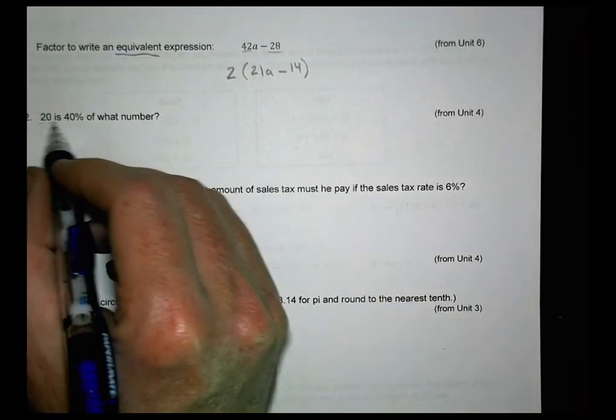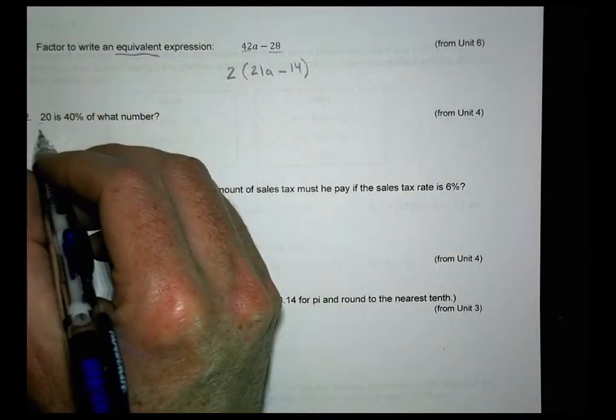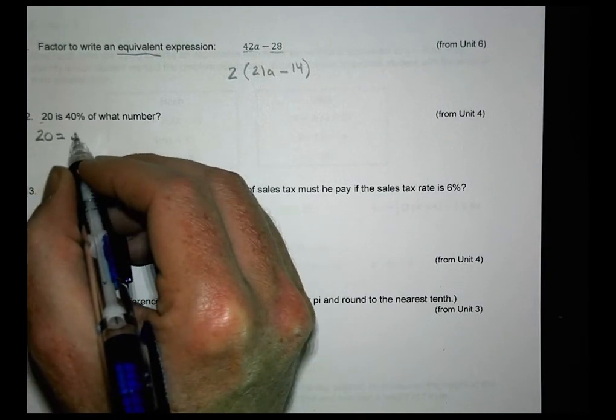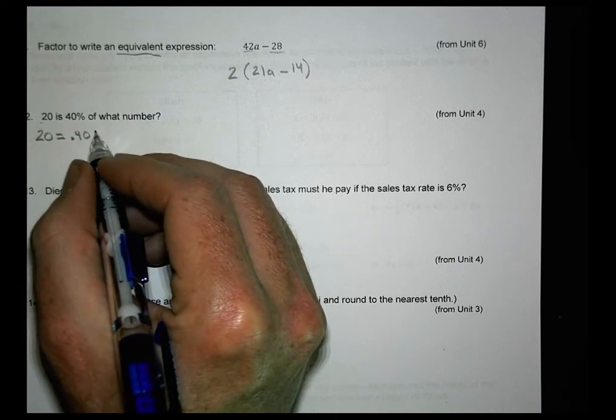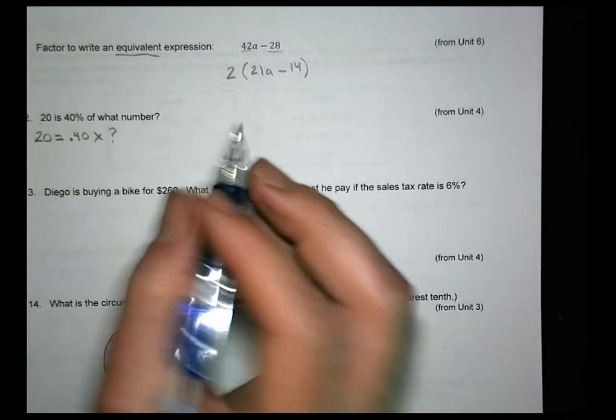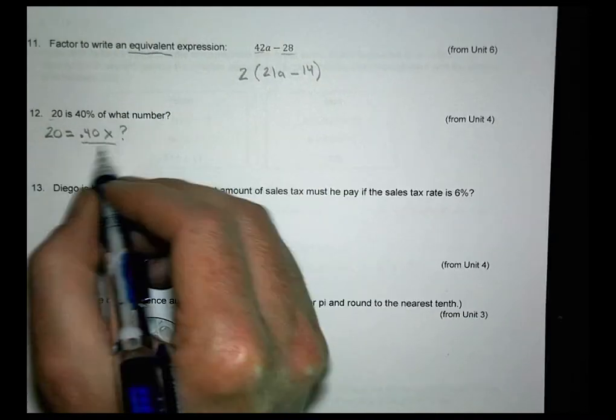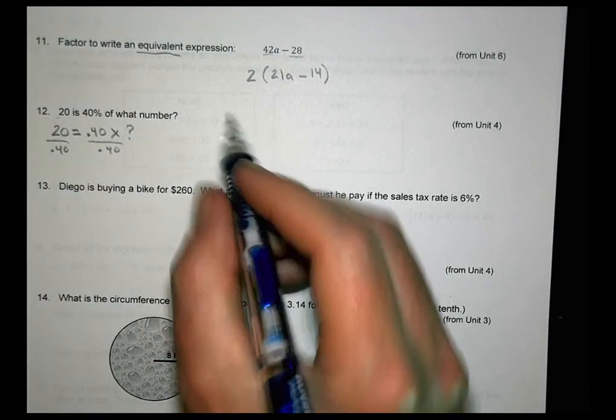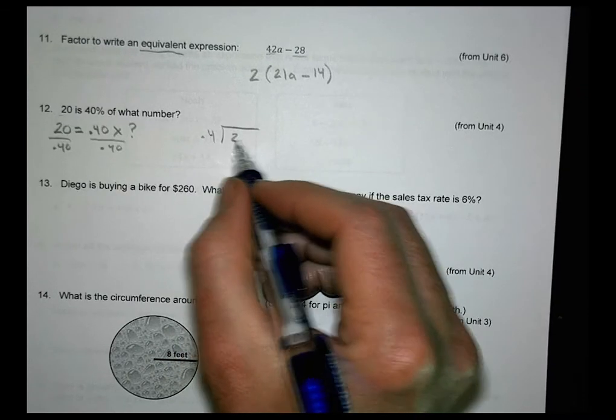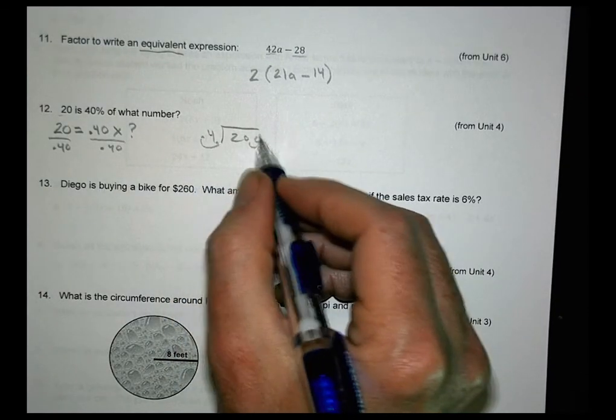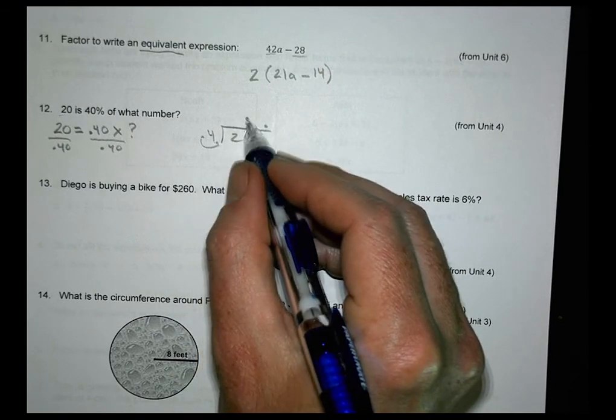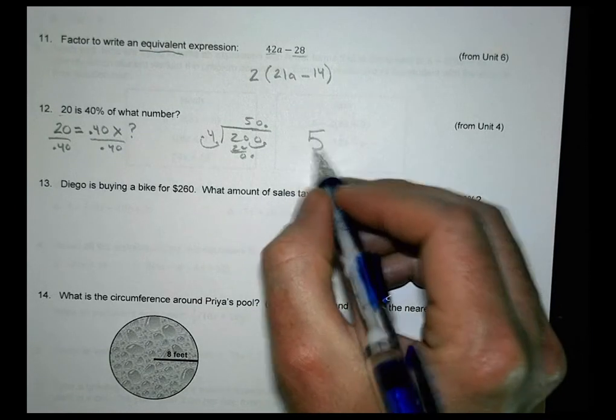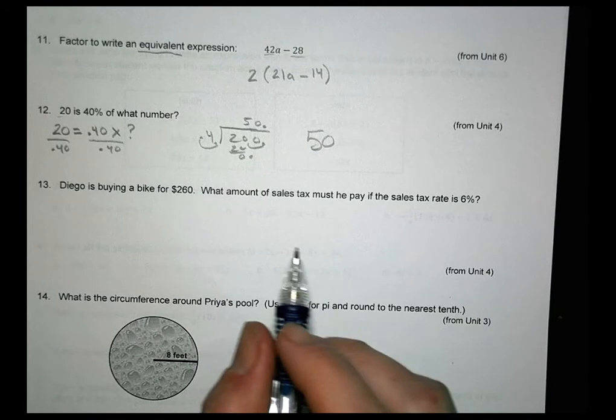All right. 20 is 40% of what number? All right. How do you write this word statement as an equation? You could say 20 is 40% 0.40 of what number? I don't know. So times what? So we can divide both sides by 0.4. Divide by 0.4. And we can solve that there. And 20 divided by 0.4. Here's 0.4 going into 20. Move the decimal over. Move the decimal over and up. 4 goes into 20 five times. With 0. So we would say 50. So our answer is 50. So 20 is 40%. What number? It's 50. That's our number.